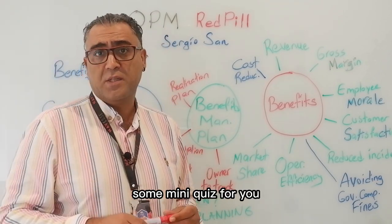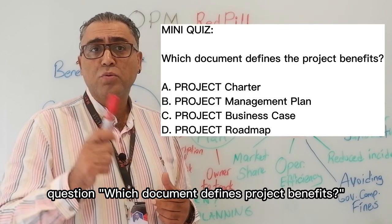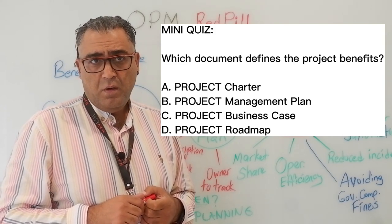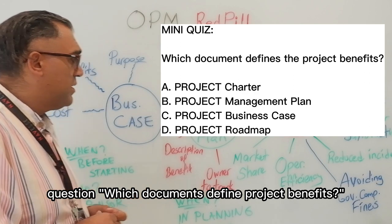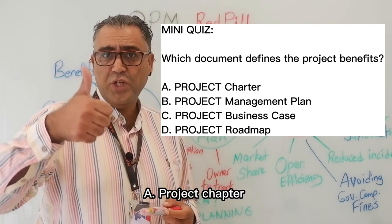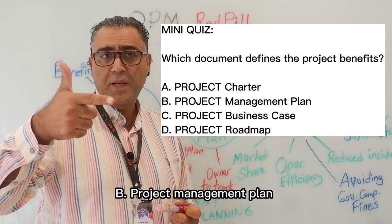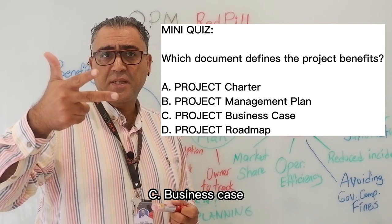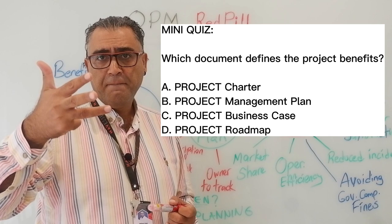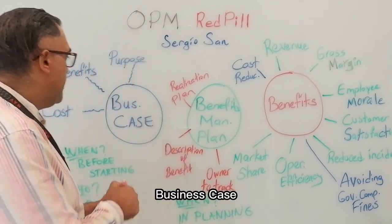Some mini quiz for you. Question: which document defines project benefits? A — Project charter. B — Project management plan. C — Business case. D — Project roadmap. The correct answer is C — Business case. In the business case, we describe the benefits of the project.